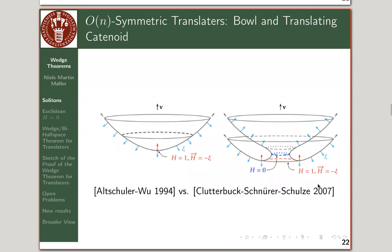Clutterbuck, Schnürer and Schulz in 2007 found catenoid versions of these — they are no longer graphs. Think of taking two bowl translators and inserting a small catenoid at the bottom to connect them, then rotating around the axis of translation. There's a whole family of them — you can make the hole larger or smaller.